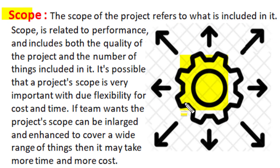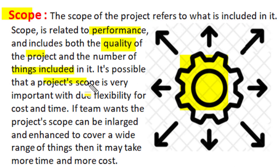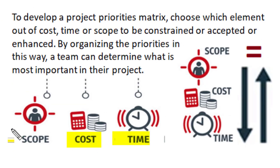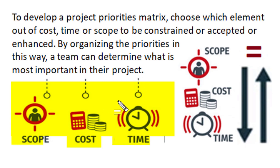The scope of a project refers to what is included in it — the specification related to quality and quantity involved in project execution. Scope includes both quality parameters and quantity parameters, like the number of things included in the project. In some projects, scope is very important and provides flexibility for budget cost and scheduled time to attain specified scope conditions. Enlarging project scope covers a wider range of things, which takes more time and needs more budget. Budget cost, schedule time and performance scope are three basic criteria specifying the minimum expectations of stakeholders for successful project implementation.